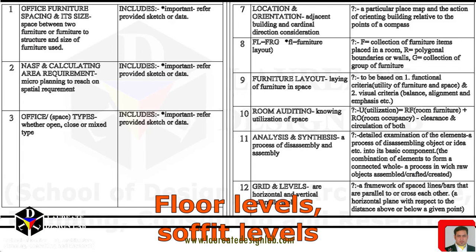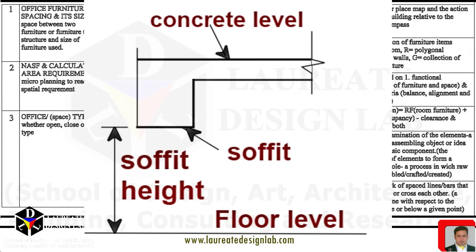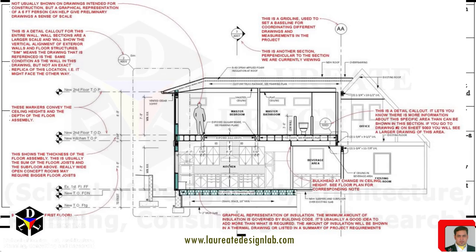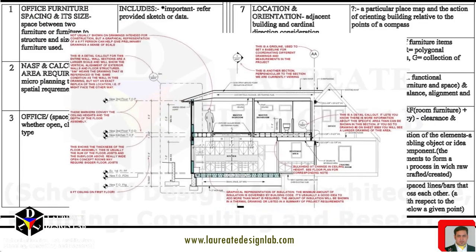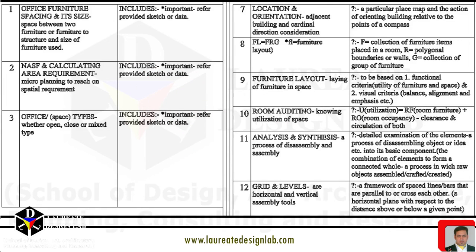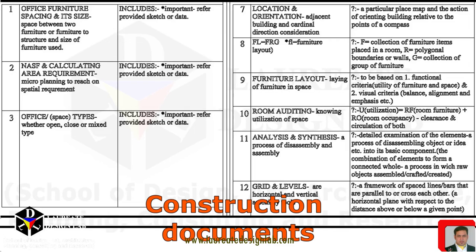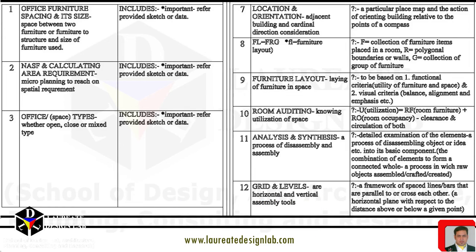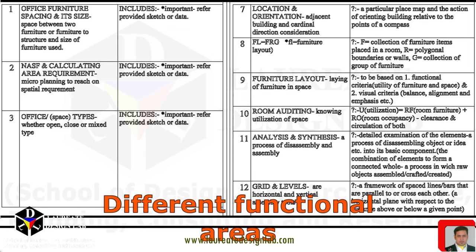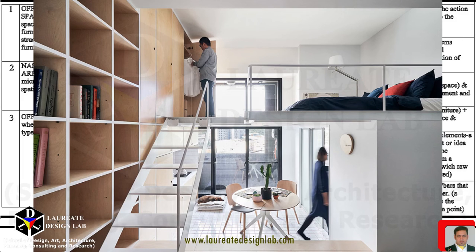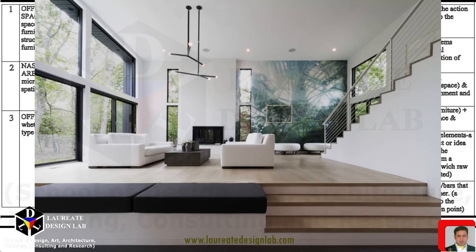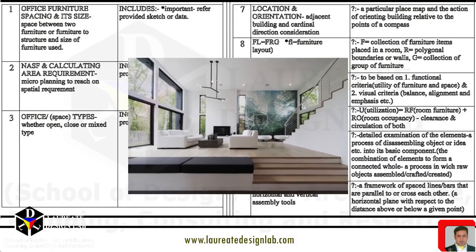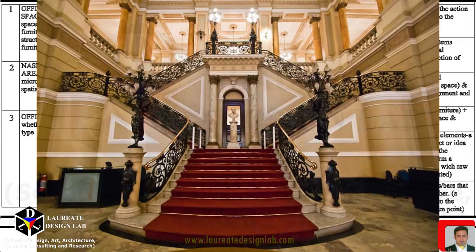Levels. Floor levels, soffit levels, and other similar terms can be considered part of level names in architecture. They are used to specify the vertical location of different elements within a building, such as floors, ceilings, and mechanical equipment. These terms are often used in architectural drawings and construction documents to ensure that all members of a project team understand the location of different elements in the building. Levels refer to the vertical division of a space and are used to create a sense of hierarchy and movement within a space. In interior design, levels can be used to divide a space into different functional areas, such as creating a mezzanine level for a bedroom or a raised platform for a seating area. In architecture, levels can be used to create a sense of movement and transition between spaces, such as a staircase leading to an upper floor or a split-level home.